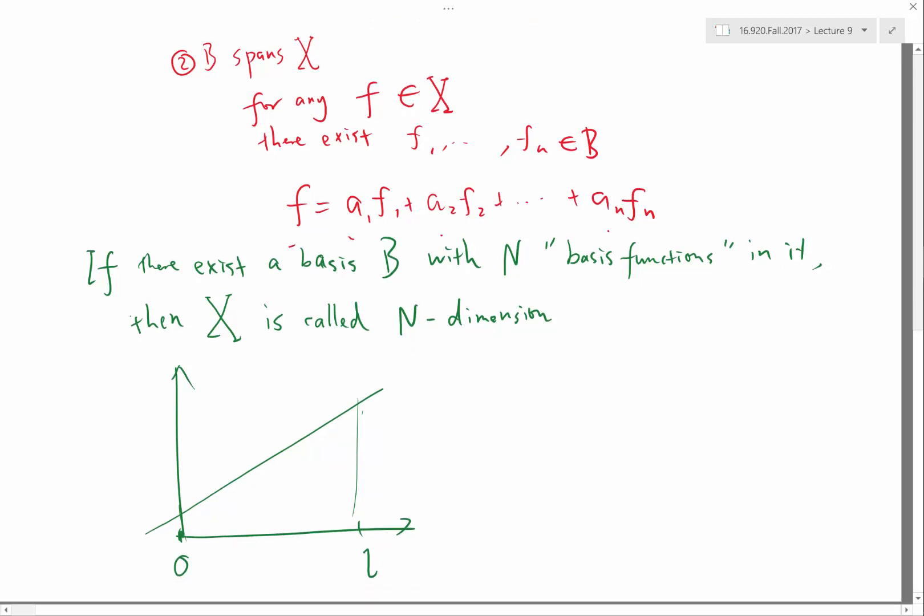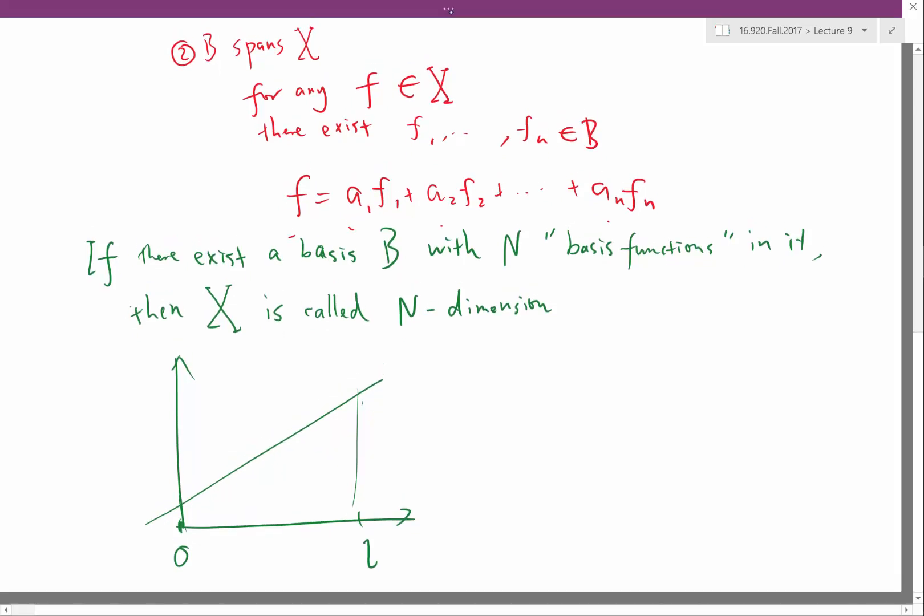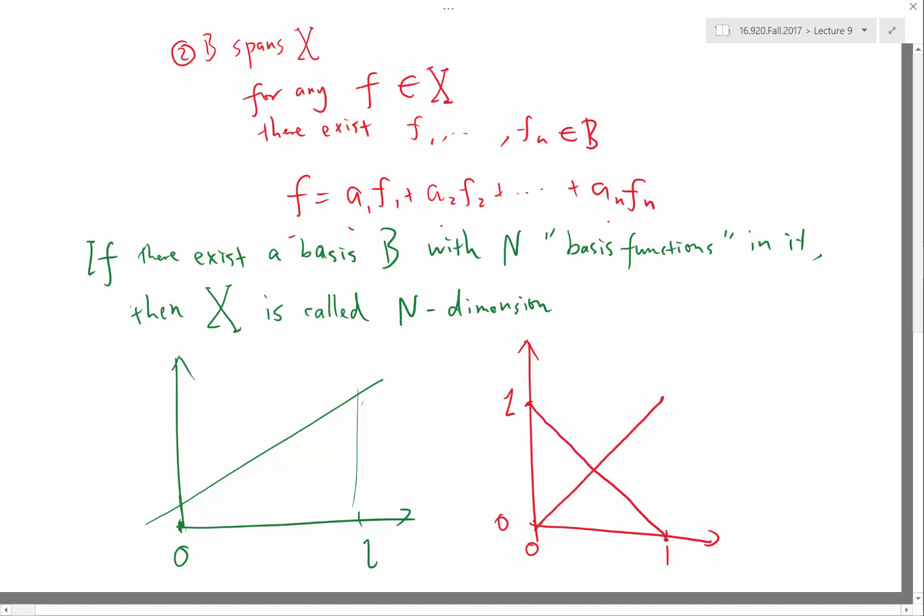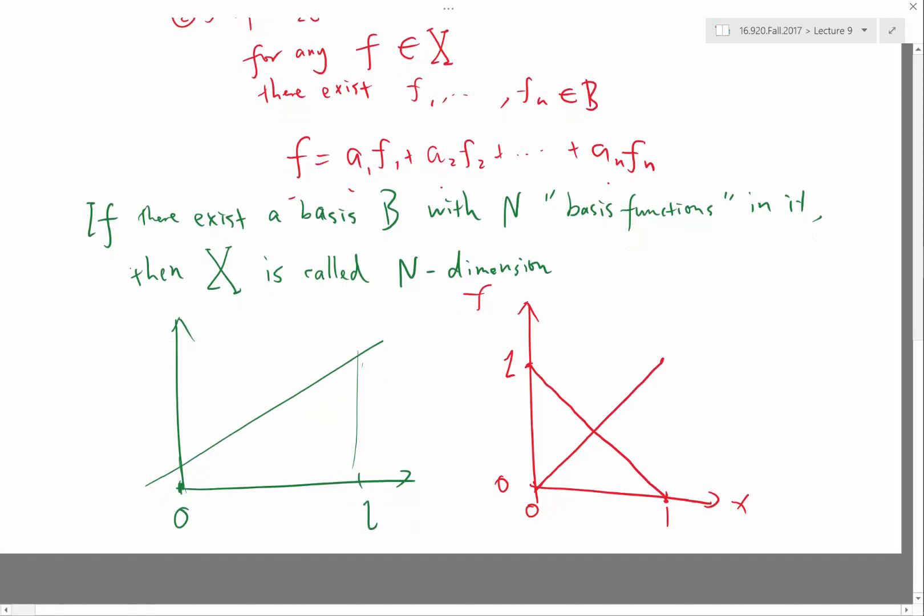So this is a two-dimensional space because I can construct two basis functions. For example, I can construct a basis function that is, one, zero, one, zero. I can have a function that goes like this. I can have another function that goes like this, a function that is equal to 1 minus x, and another function that is equal to x. So for whatever straight line function I have, I can have f at zero times 1 minus x plus f at one times x. I have the function. So whatever f of x would be equal to f zero times 1 minus x plus f one times x. So basically things cancel out, and I have that function.